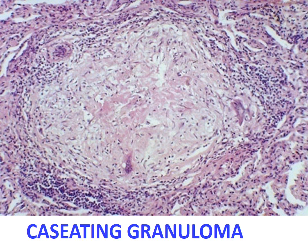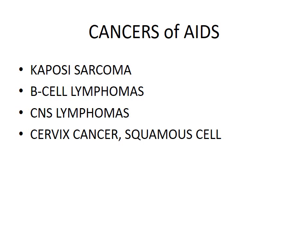Cancers associated with AIDS: Kaposi sarcoma is on the top, followed by diffuse large B-cell lymphomas and primary CNS lymphomas. Before AIDS, primary CNS lymphomas were very rare. Toxoplasmosis is also very common in AIDS patients. Cervical cancer — squamous cell carcinoma as a result of HPV infection — is also common in AIDS patients.